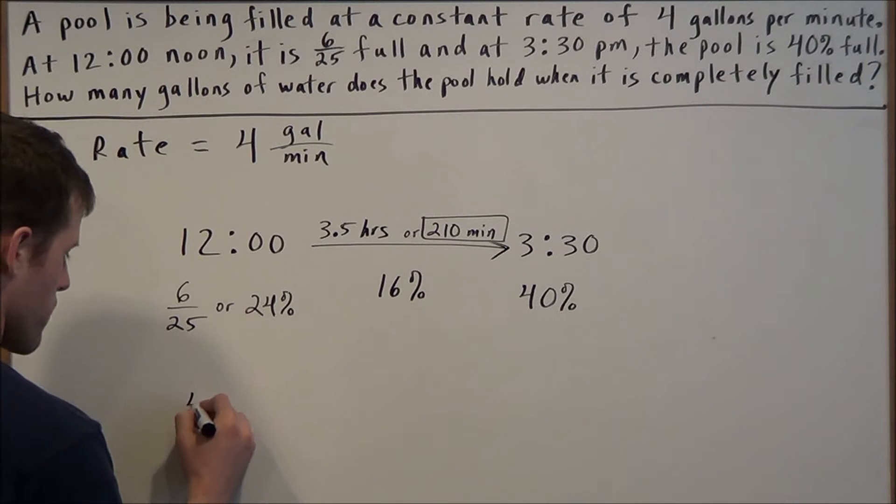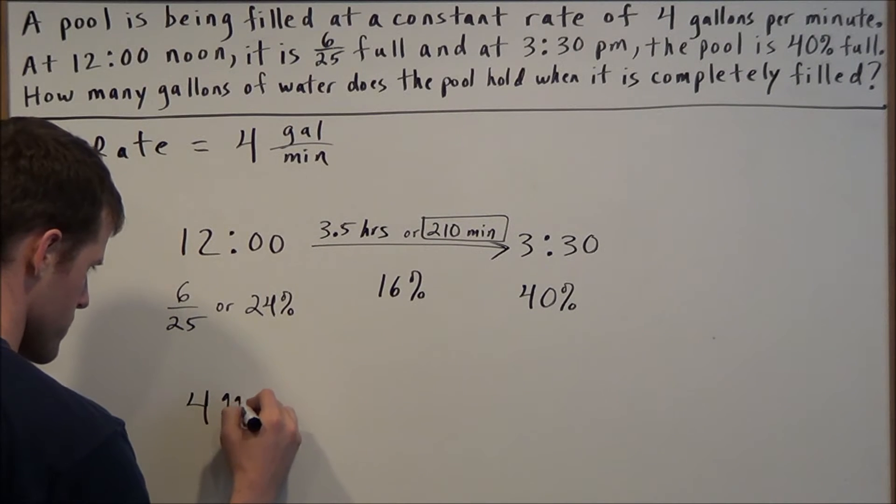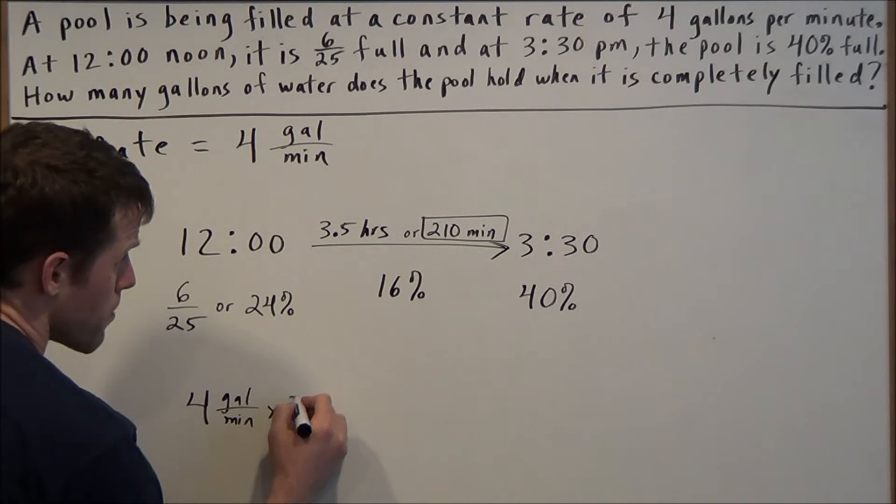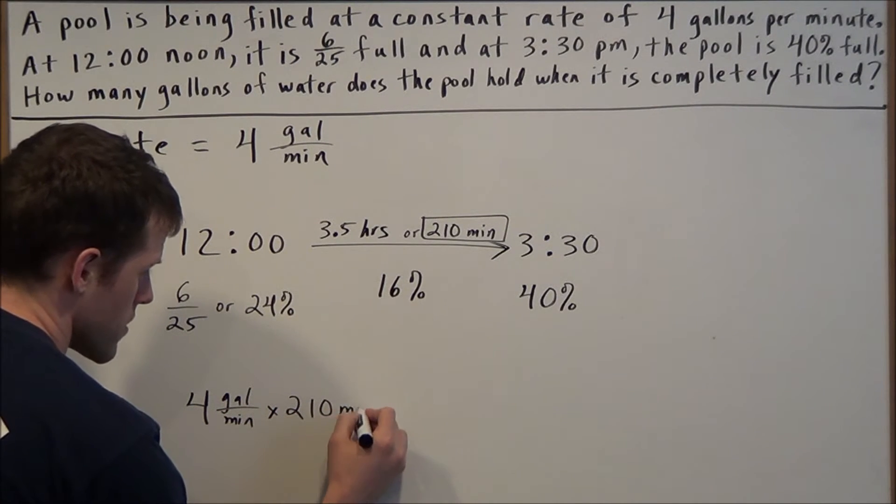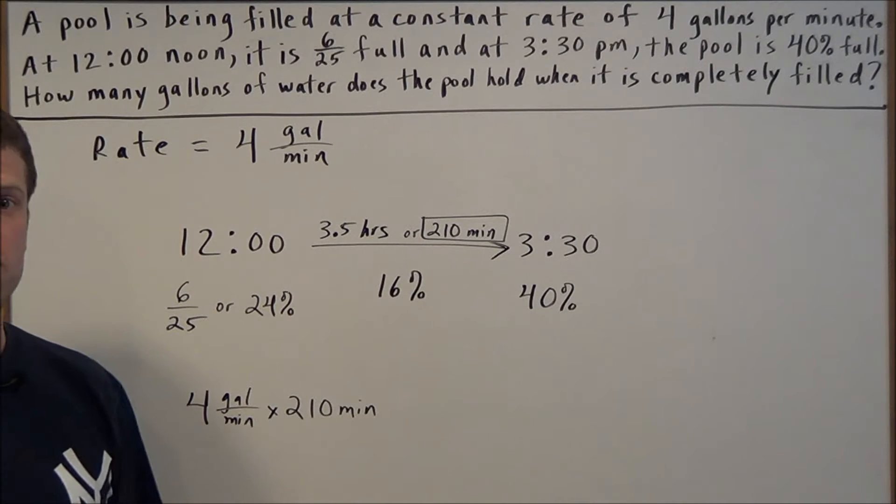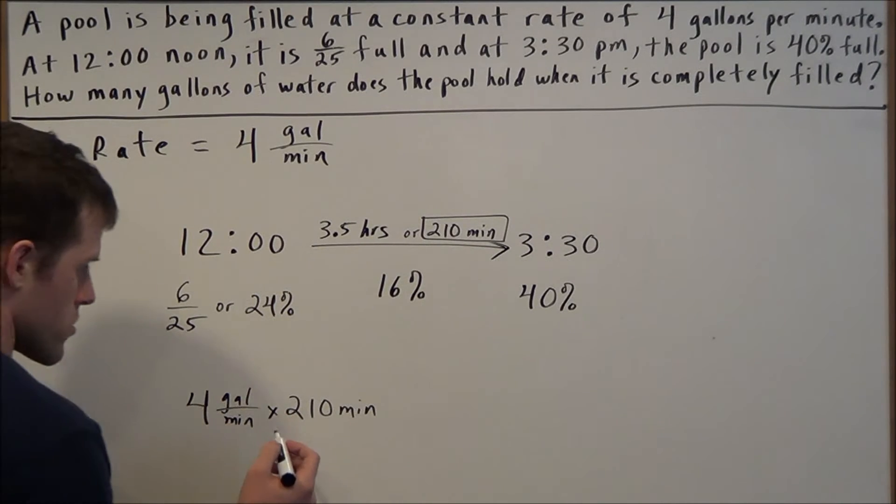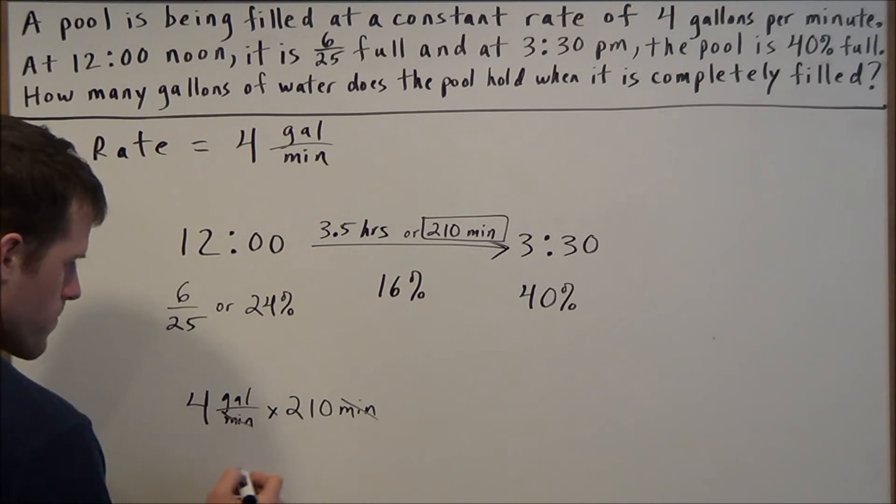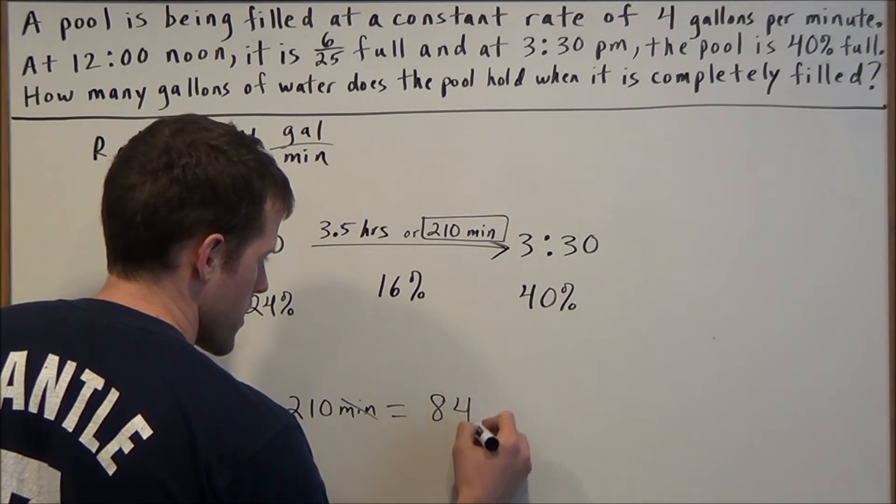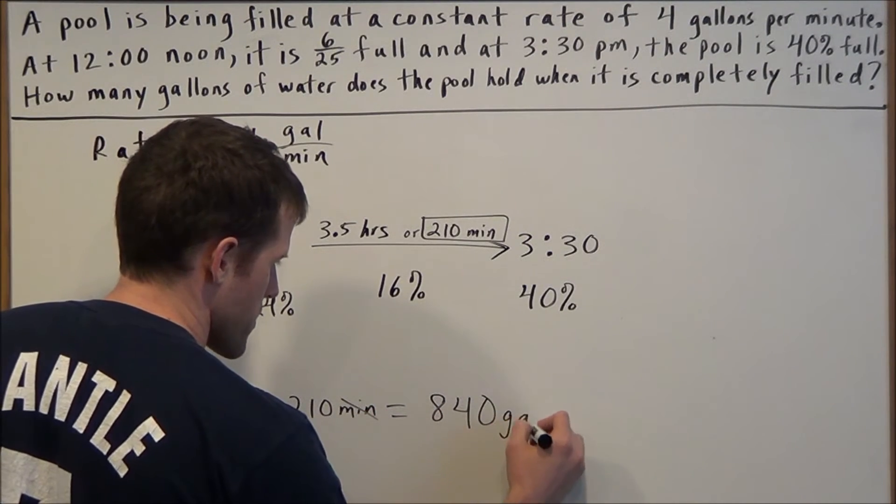If we know that there are 4 gallons going into the pool every minute, if we multiply that by 210 minutes, that's going to tell us how much water went into the pool in this timeframe of 210 minutes. We can cancel out the minutes, and 4 times 210 is 840, and that's 840 gallons.